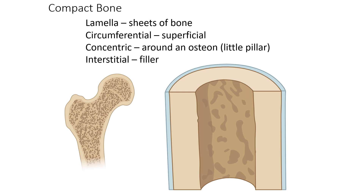As we just learned, layers or sheets of compact bone are called lamellae. This becomes confusing because there are many different types of lamellae that create the overall structure of compact bone tissue. This picture here is kind of like a pizza slice of bone, and you can see the spongy bone toward the center or deep part of the bone in the interior medullary cavity. This area would be filled with marrow, because that's the marrow cavity.